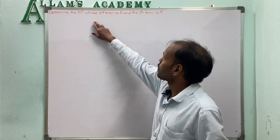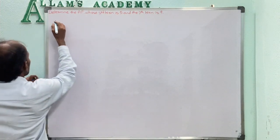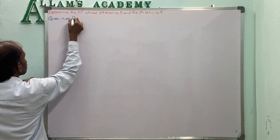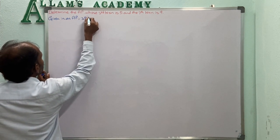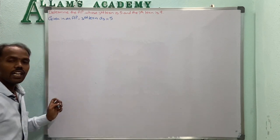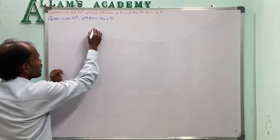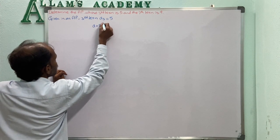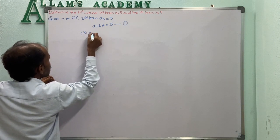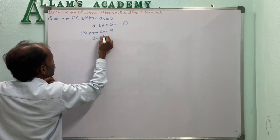Problem: Determine the AP whose third term is 5 and seventh term is 9. Given in an AP: the third term A3 = 5. By the general form AN = A + (N-1)D, we get A3 = A + 2D = 5. The seventh term A7 = A + 6D = 9. That is the second equation.